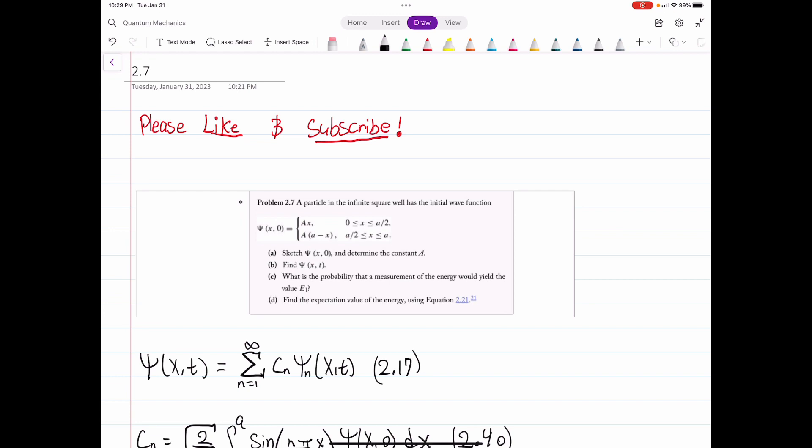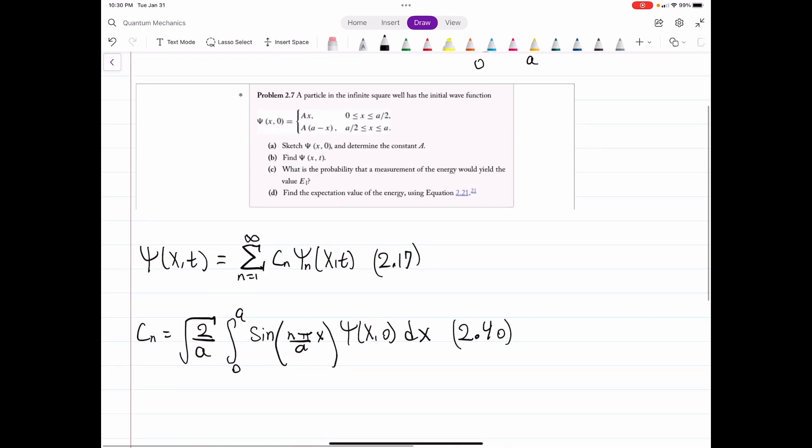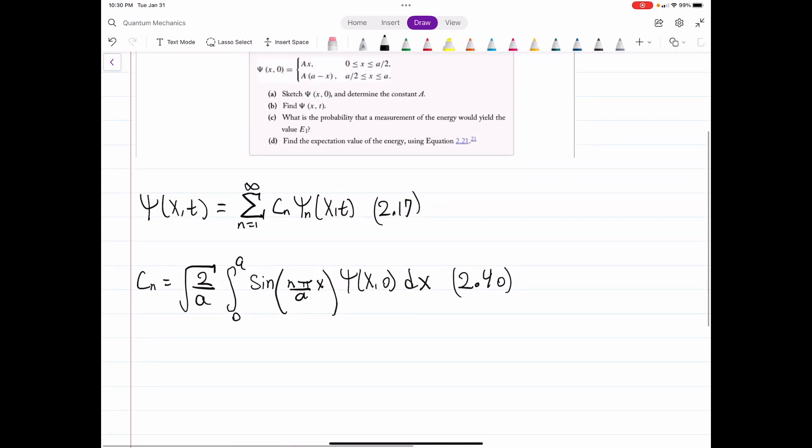So for problem 2.7, we have a particle in an infinite square well, and we're given an initial wave function at t equals 0. They have us do a whole bunch of things. So this is continuing with our infinite square well problems. We did a problem last time with that, and these equations will be useful.